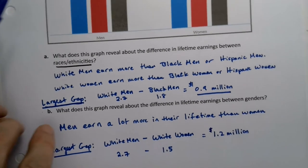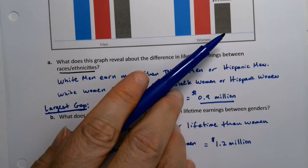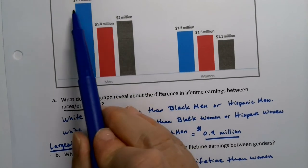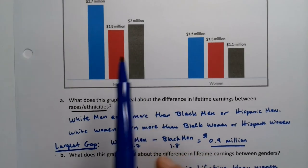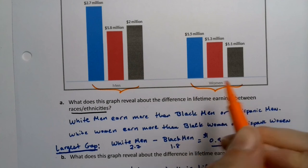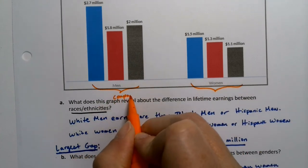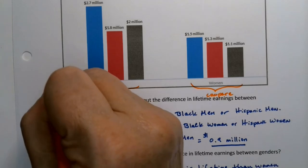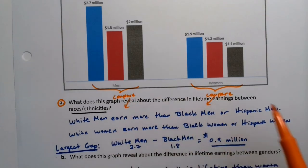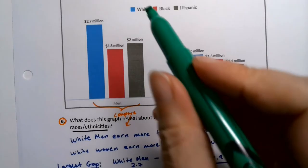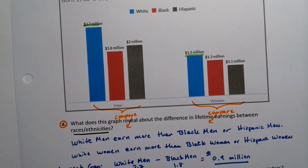If you want to cross race/ethnicities, 2.7 minus 1.1 would be a very large gap, but that's not really what we're doing here. You either compare the three bars within each gender group to each other — that's comparison A — or you compare same-race bars across genders: blue bar to blue bar, pink bar to pink bar.